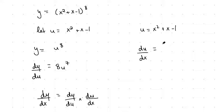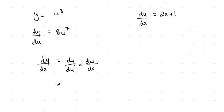So we have du/dx then is equal to 2x plus 1. So when you differentiate all of that with respect to x, you get 2x plus 1. And then our formula tells us to multiply those two together to get our dy/dx.